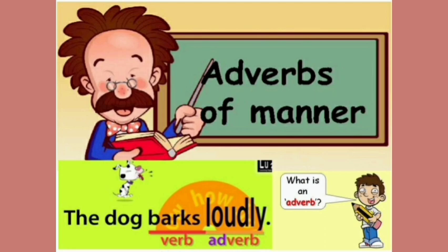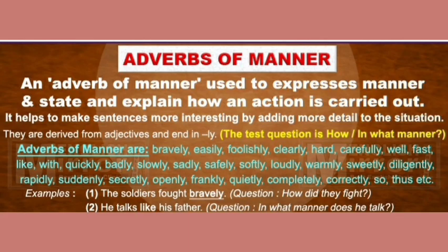So what is an adverb? An adverb is that part of speech that tells us more about a verb, adjective, or another adverb. For example, the dog barks loudly — here the verb is 'bark' and 'loudly' is the adverb. The adverb 'loudly' modifies the verb 'bark'. How does the dog bark? The dog barks loudly.